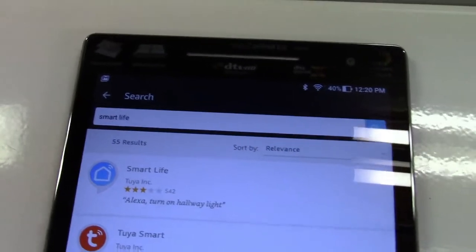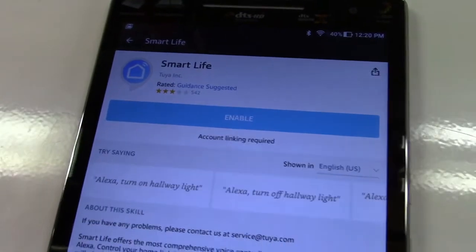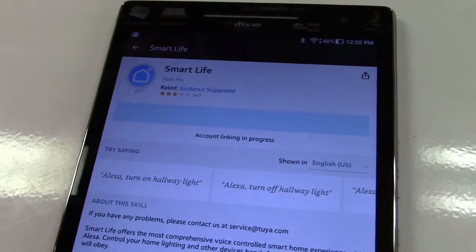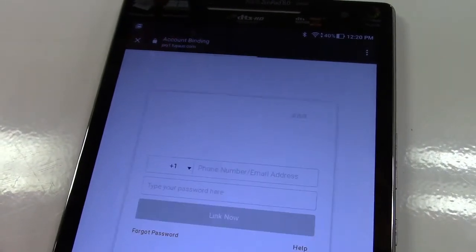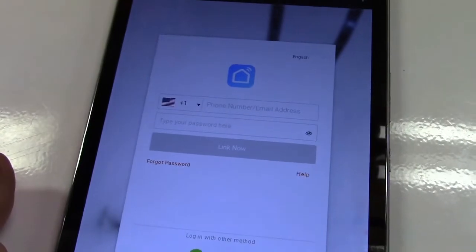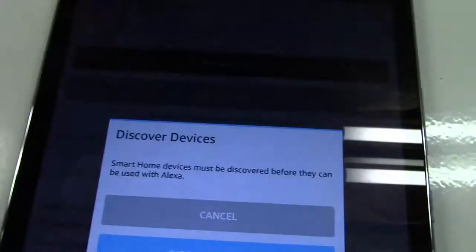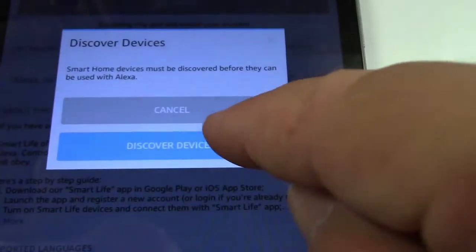But now we want to set it up so it will work with the Amazon Echo. Now within the Alexa app we go over to skills and choose Smart Life and enable it. Now we have to put in our credentials. Okay, now that we've entered that it's linked. Close that and we're going to discover devices.